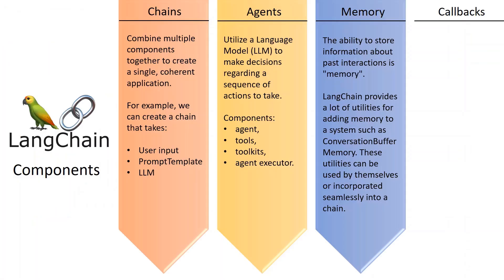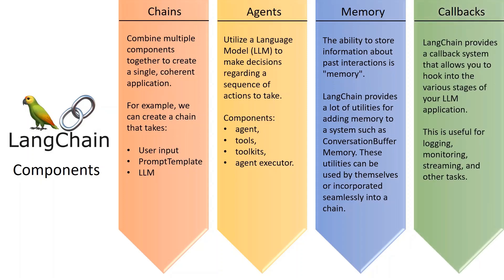Another important component of LangChain is callbacks. LangChain provides a callback system that allows you to hook into the various stages of your LLM application. This is useful for logging, monitoring, streaming, and other tasks. LangChain provides a few built-in handlers that you can use to get started, available in the langchain callbacks module. The most basic handler is the stdout callback handler, which simply logs all events to stdout.